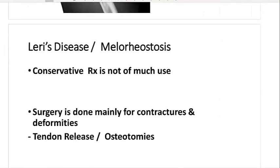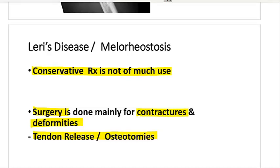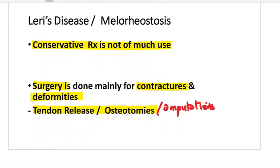Regarding treatment, conservative treatment is not going to be of much use. Surgical treatment is done, aiming to release contractures and deformities — tendon releases and osteotomies are performed when a particular joint or periarticular area is involved. Historically, amputation has even been mentioned as a treatment, but we try to salvage the limb as best as possible.